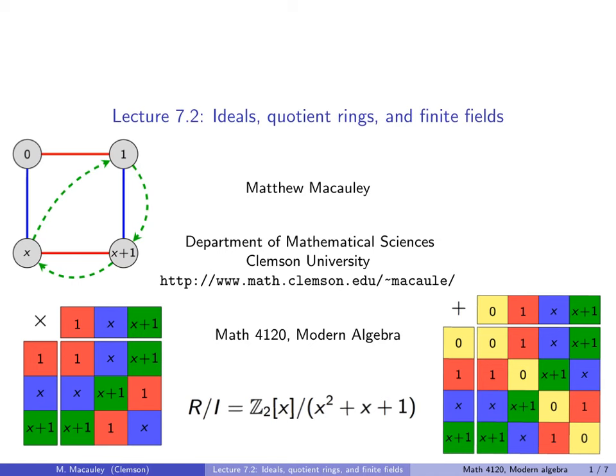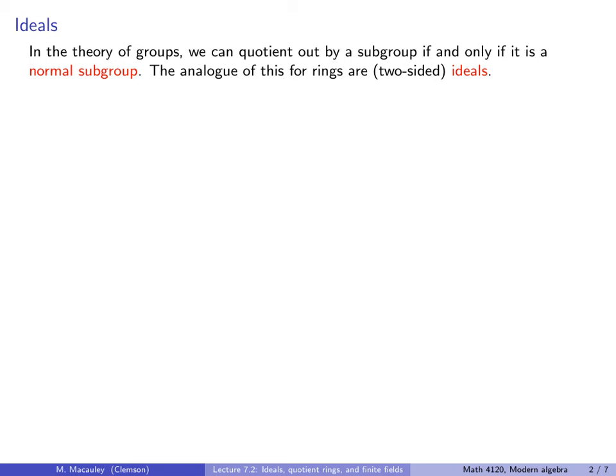To motivate the concept of an ideal, let's recall back when we were studying the theory of groups that we could quotient out by a subgroup if and only if it is a normal subgroup. The analog of this for rings are things that are called two-sided ideals.